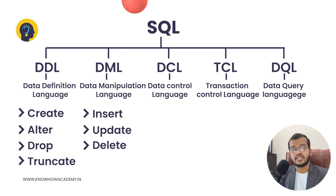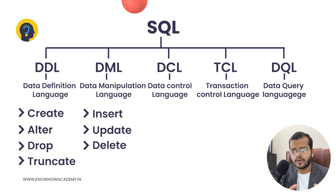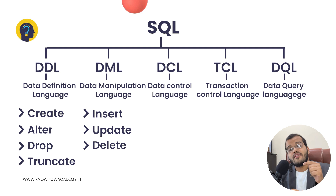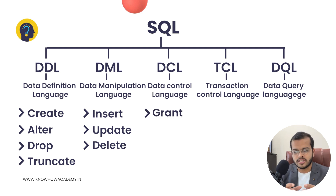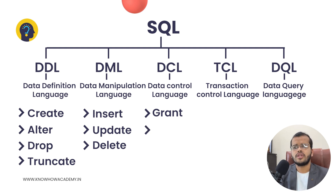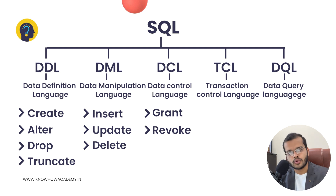The next command type is DCL — Data Control Language — where I have control over the data. For example, I have created a database, created tables, and have records in it. Now I need to give access to a colleague in my organization. I will be granting access to my colleague for this database and its tables — for that, we use the Grant command. If you want to take back the access you have given, we use Revoke. You granted access to XYZ person, and you want to get it back — use the Revoke command.